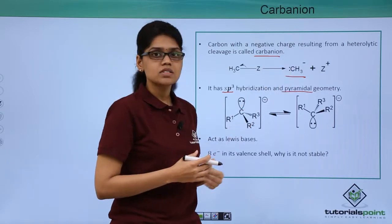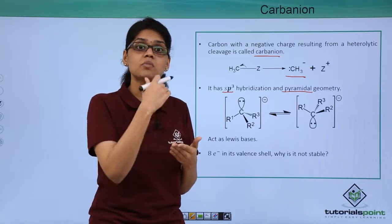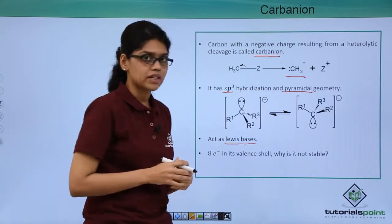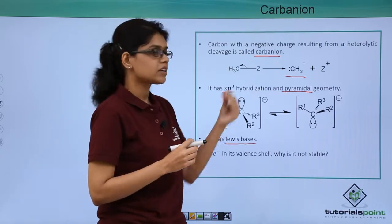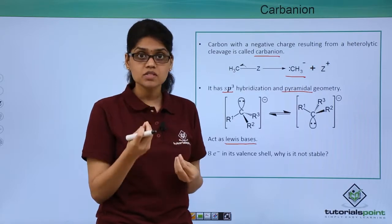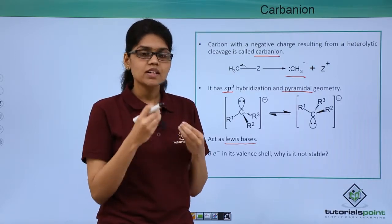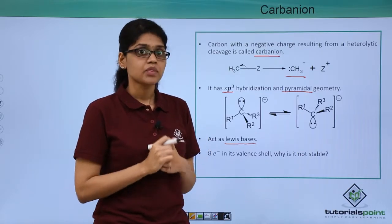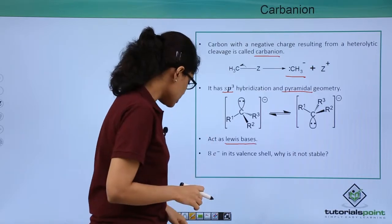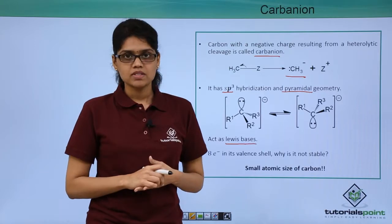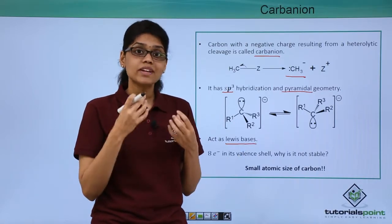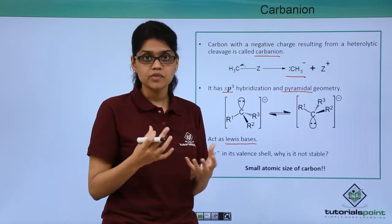Carbon in a carbanion has a negative charge — it is electron-rich — unlike a carbocation where carbon had a positive charge and was electron-deficient. Because it is electron-rich, it acts as a Lewis base. Interestingly, carbon here has 8 electrons in its valence shell, yet this charged species is not stable. This is because carbon has a very small atomic size; atomic size decreases across a period, so it is very difficult to accommodate the extra negative charge, making it highly unstable.